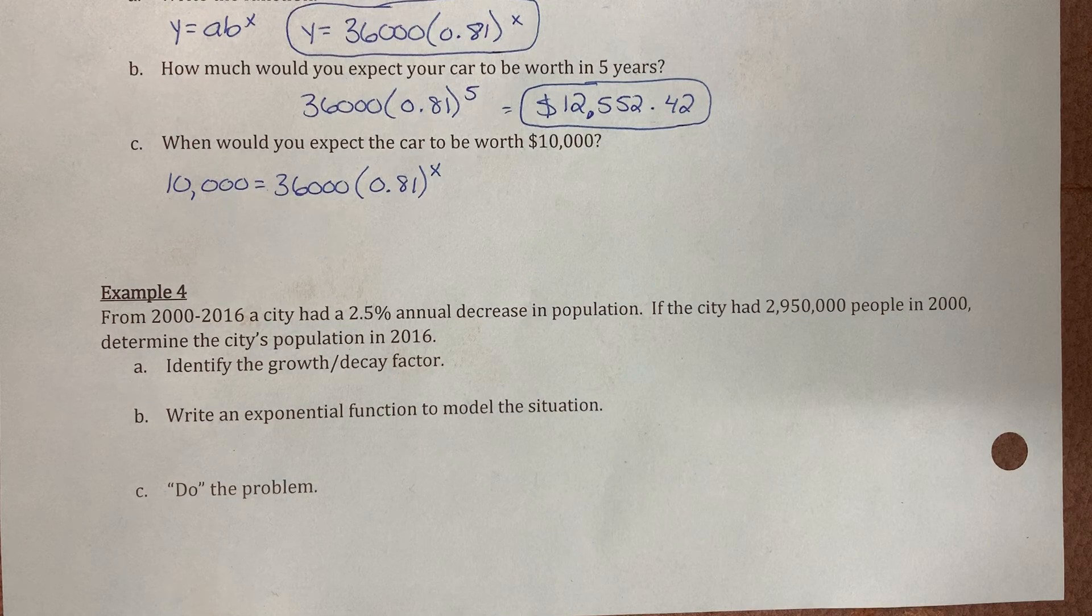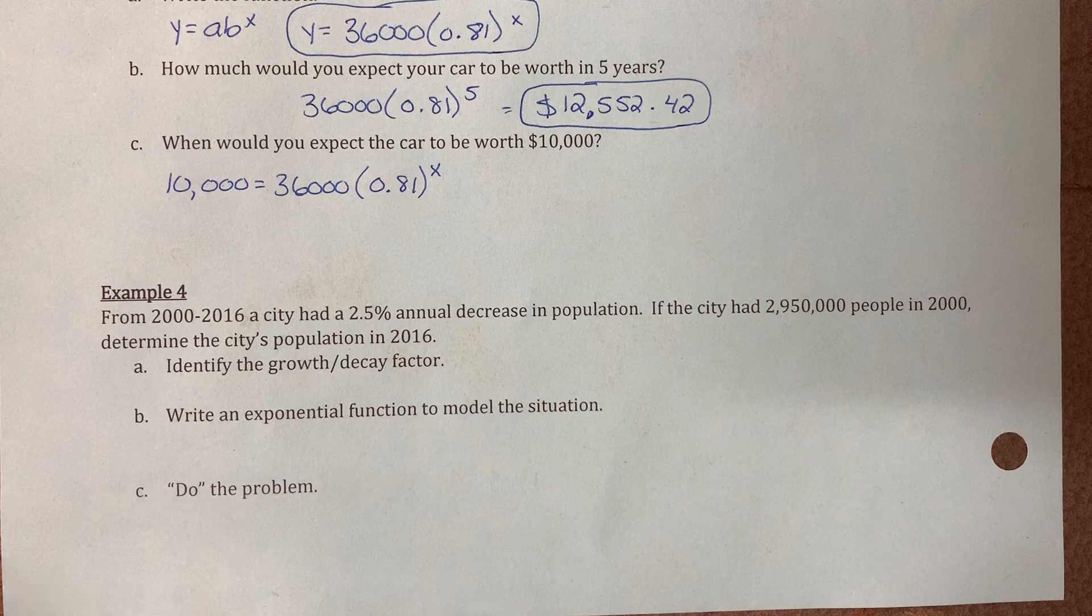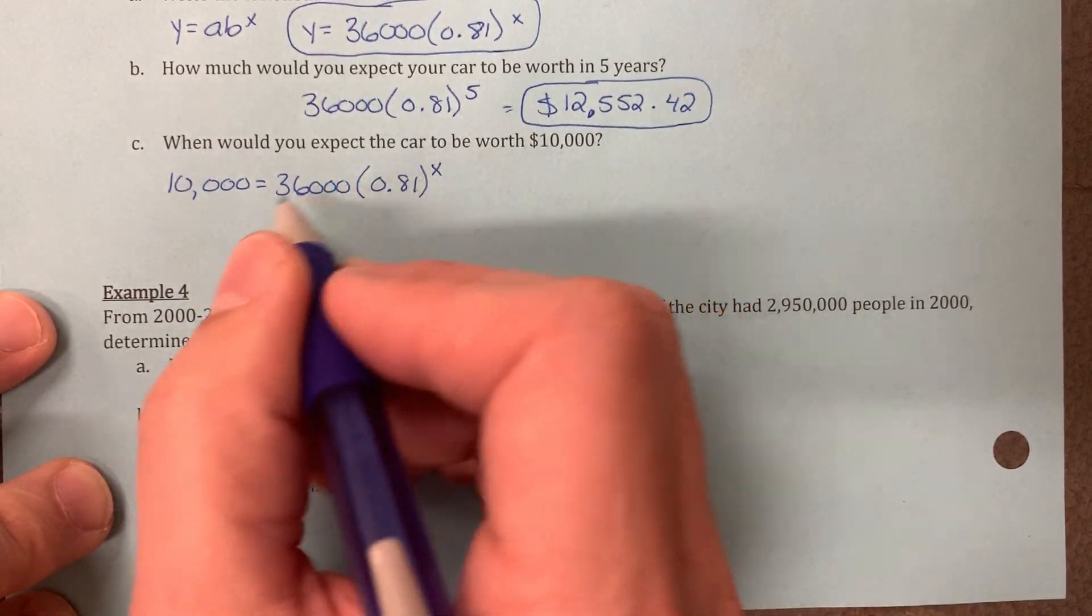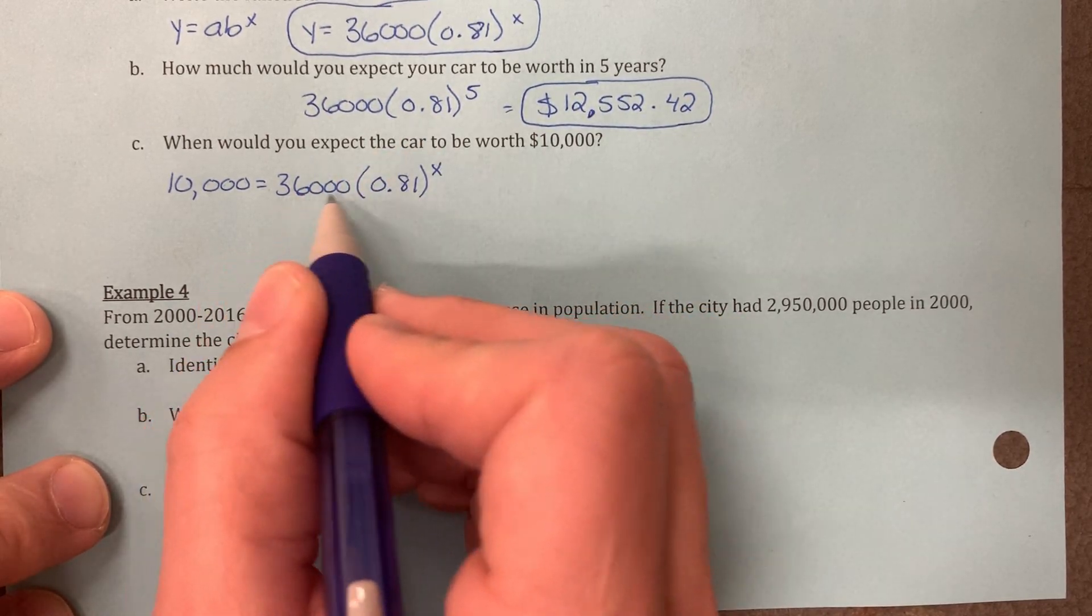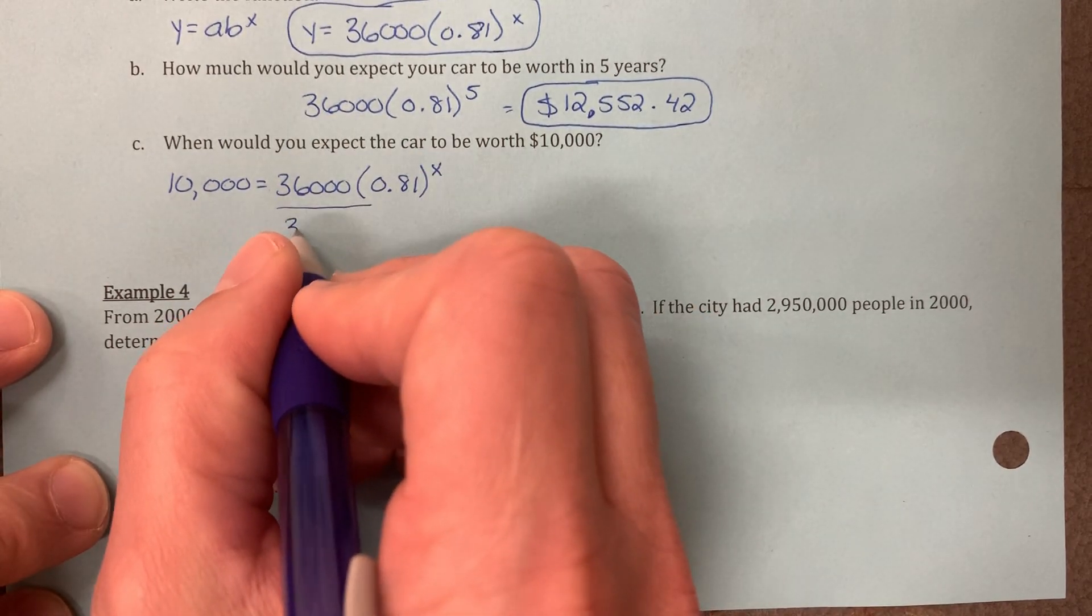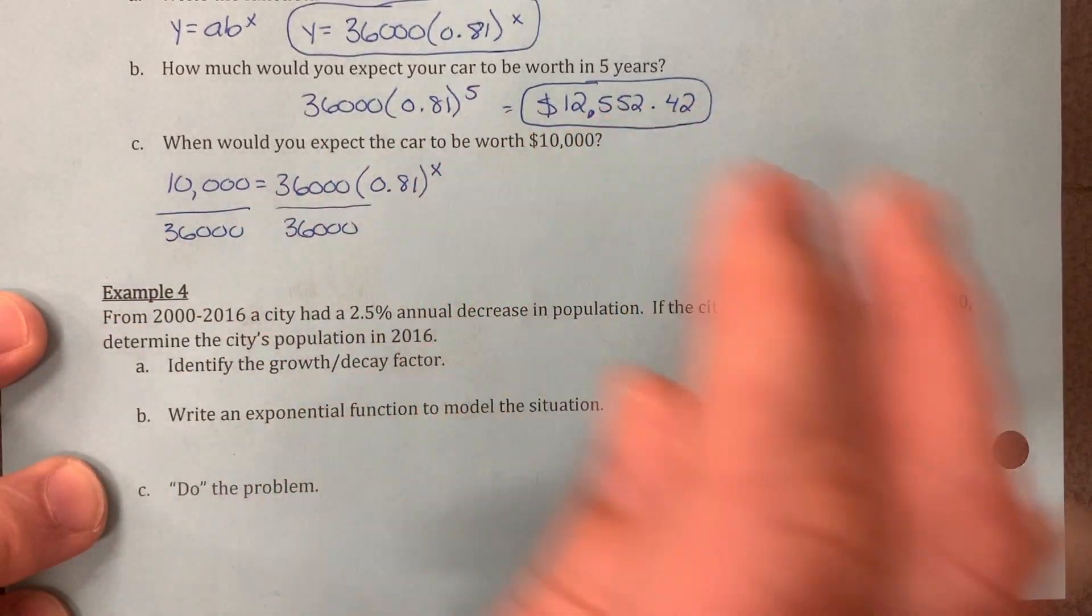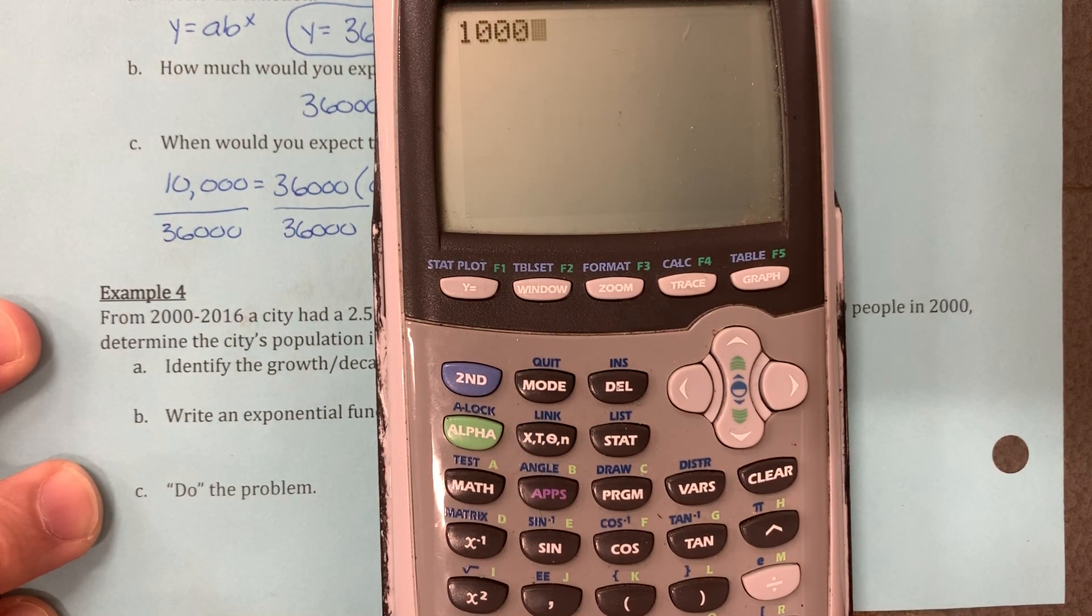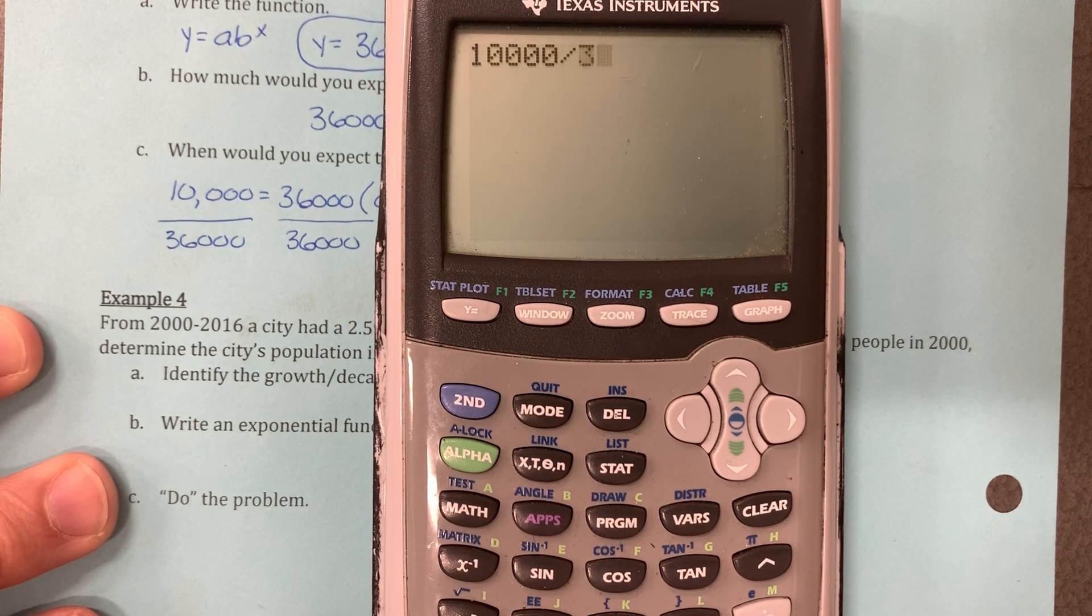Now, this is where we're going to start introducing the properties of logs. So we are going to first, we're trying to solve for the x here. So we're going to divide by 36,000 because that's being multiplied to this amount. So we divide by the 36,000 on both sides.